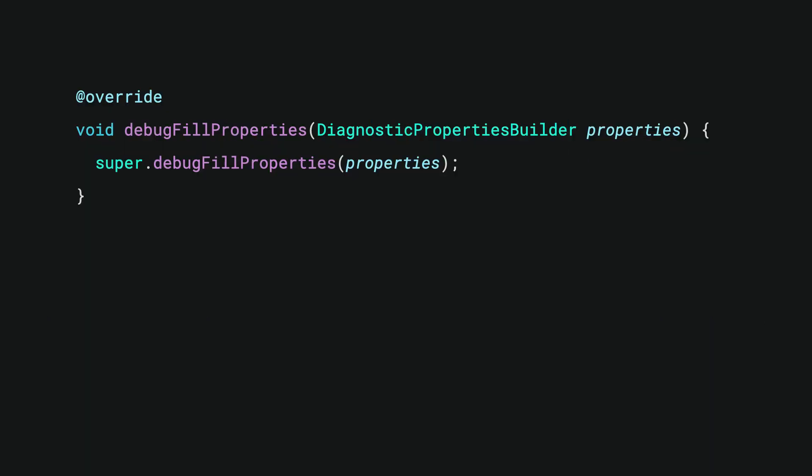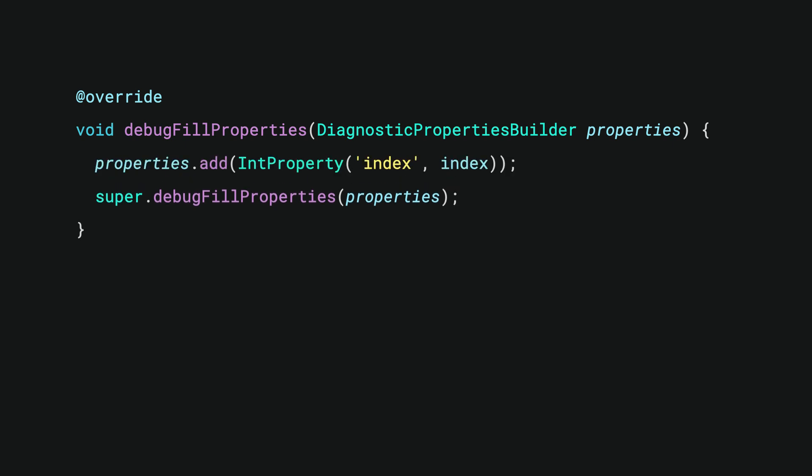Almost every material widget implements this so that your app can be inspected without you having to do anything. But it's obvious that custom widgets don't come with a lot out of the box. To get started, override the `debugFillProperties` method and add new properties to the builder list. Which type you add depends on the type of your instance variable, and you can always find the right one by looking up the variable of the same type in a material widget. At heart, they are all subclasses of `DiagnosticProperties`. In my case, to store an integer property named `index`, I added an `IntProperty` with the debug label `index` and the actual index itself as a positional parameter.